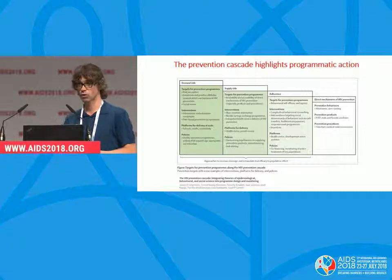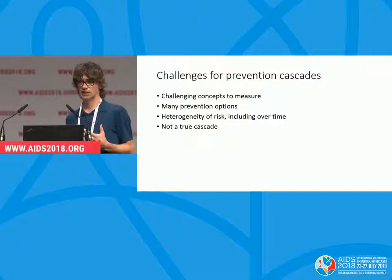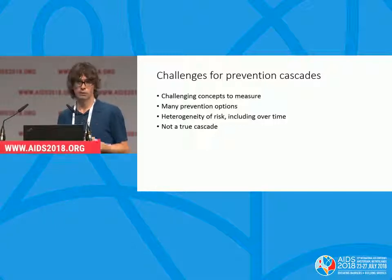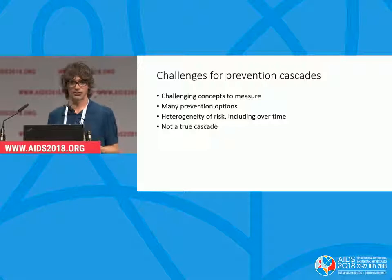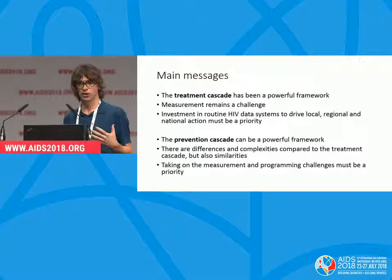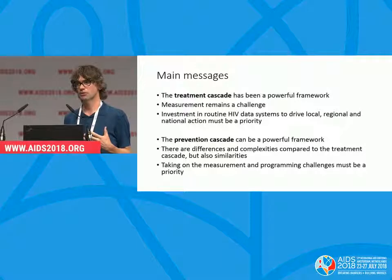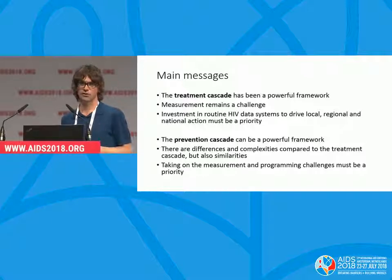There are many challenges in taking the idea of a prevention cascade forward. These are challenging concepts to measure. Treatment and prevention are very different — one reason being that there are many prevention options for people, people have large degrees of heterogeneity in their risk, and that changes over time. The prevention cascade isn't a true cascade in the sense that every step is conditional on the next. But our overarching message is that the treatment cascade has been very powerful — it's not easy to measure, certainly not always in a way that can guide action. We would like to believe the prevention cascade can also be helpful in the same way, and taking on these measurement and programming challenges has been a theme of the conference.